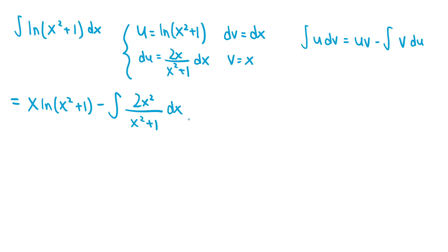So we need to do the integral of the rational function 2x² over (x² + 1). To do this, we need to use polynomial long division to split the rational function into a sum of a polynomial and a fraction with the same denominator x² + 1, but where the numerator has a degree less than that of the denominator. Basically we have a quadratic in the denominator and a quadratic in the numerator, so we need the numerator to have degree 1 or less.